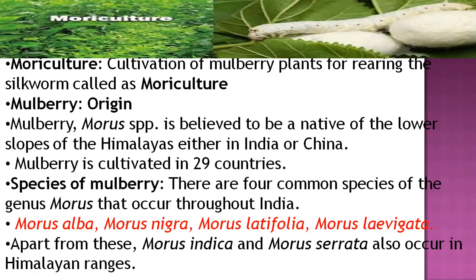There are four major types of mulberry species: Morus alba, Morus nigra, Morus latifolia, and Morus laevigata. Apart from these, some other species are also found in the Himalayan region — Morus indica and Morus serrata — which also occur in India, mostly in the Himalayan region.